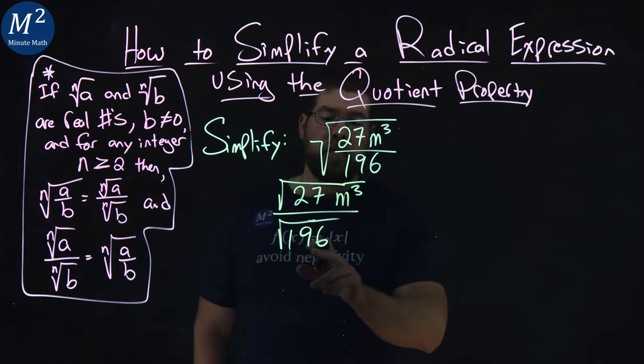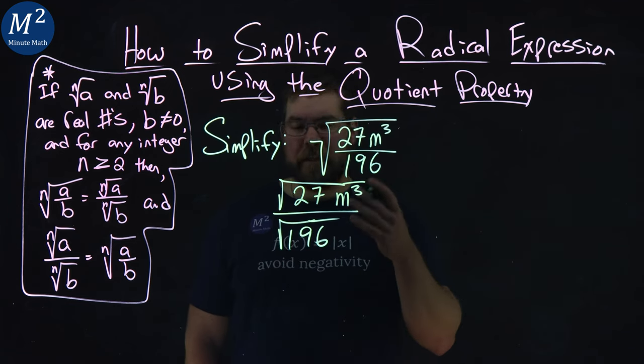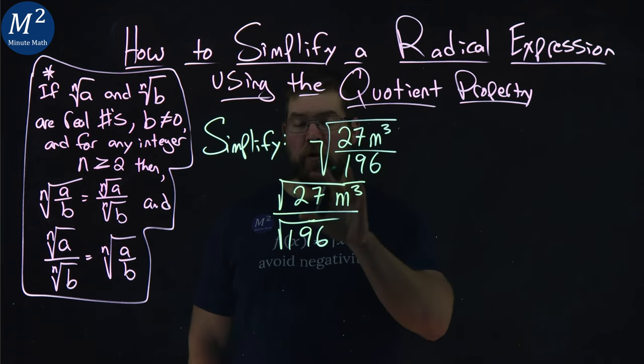Now, like I said, the denominator here, square root of 196 is 14. It makes it pretty easy, but I want to separate the numerator up as well.